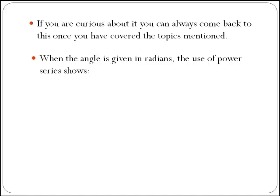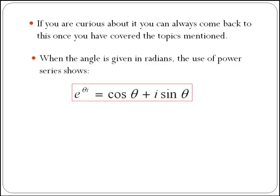When the angle is given in radians, the use of power series shows that e to the power of theta i, where theta is the angle in radians, is equal to cos of theta plus i sine of theta.